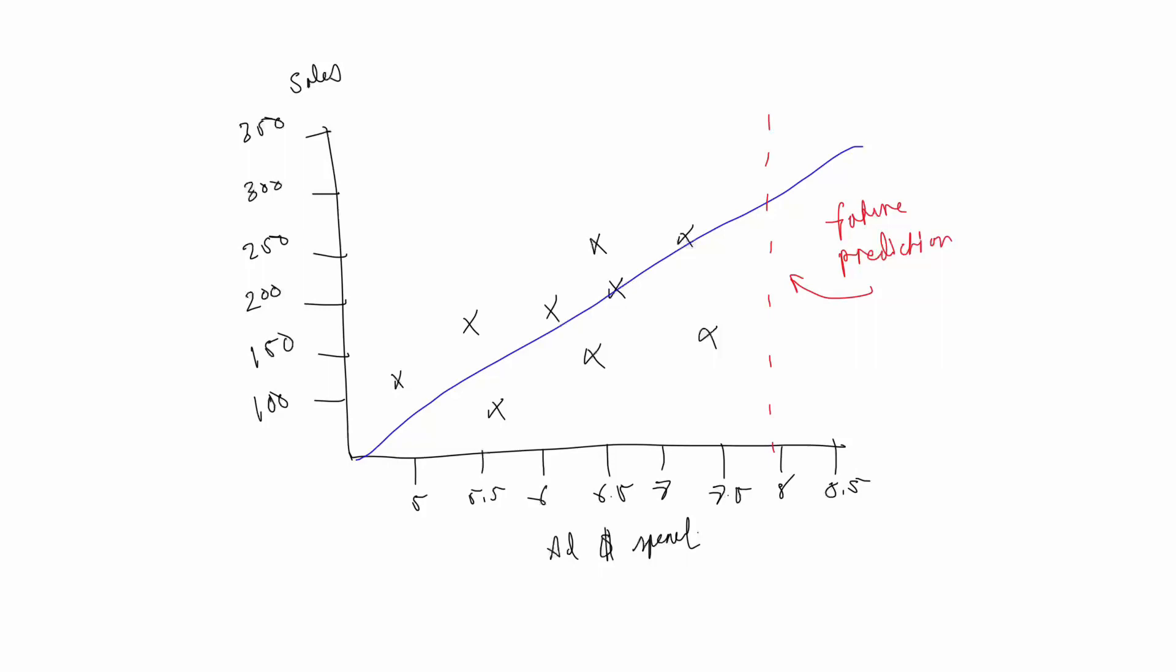you basically try to say if my ad spend is 8 and I don't have any sales data for that, using the line of best fit, it would try to figure out what our sales would be, or it would be its prediction.